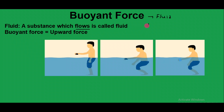For example, you can take a liquid — any water-type liquid. Air also flows, so air also counts as a fluid. It does not have a particular fixed shape. So these are called fluids.